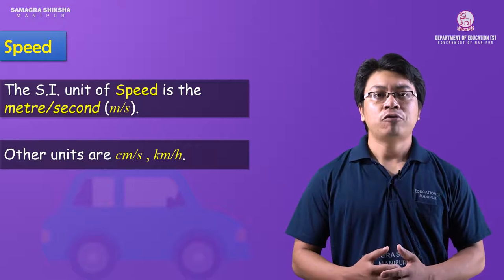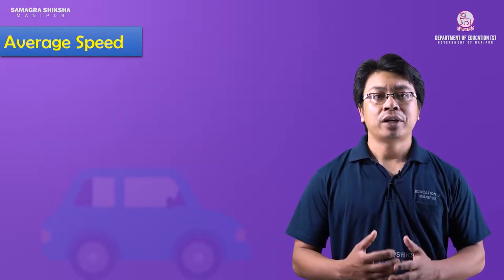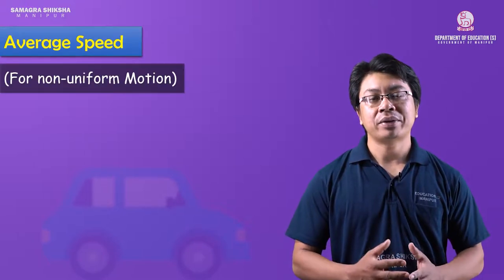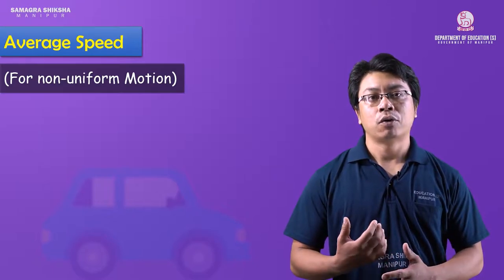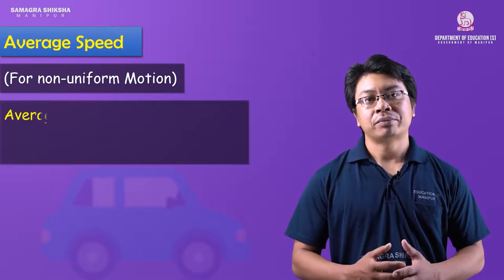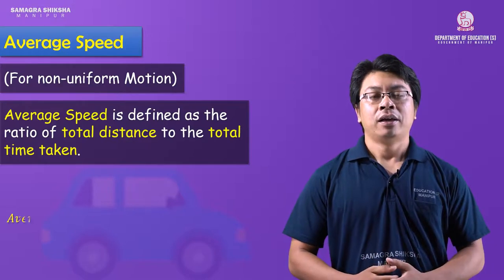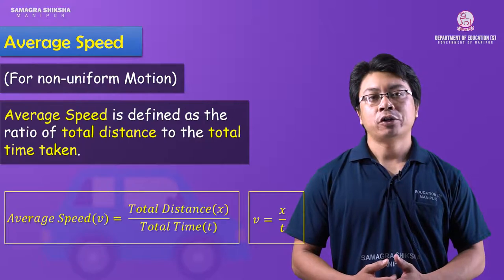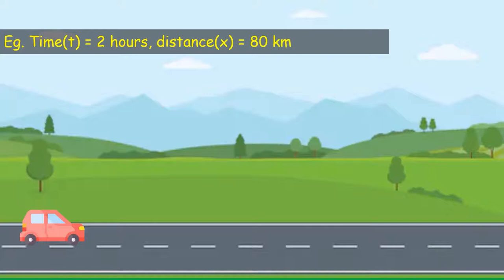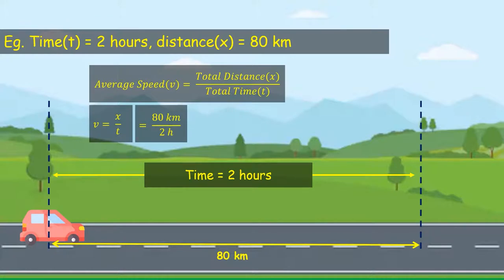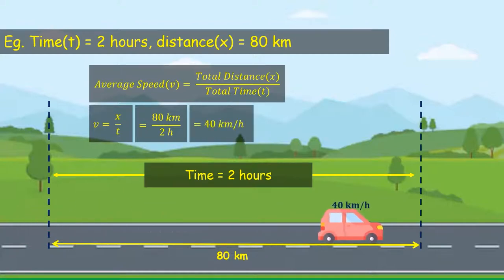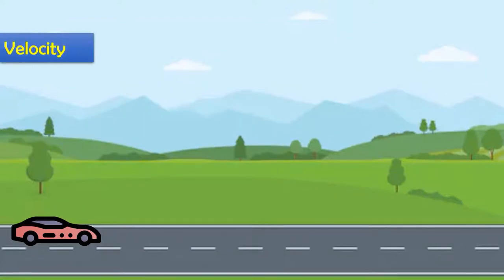For non-uniform motion, speed varies over each time interval. To find average speed: the total distance is 80 km, the total time is 2 hours. The average speed is equal to total distance divided by total time, which gives 40 km per hour.